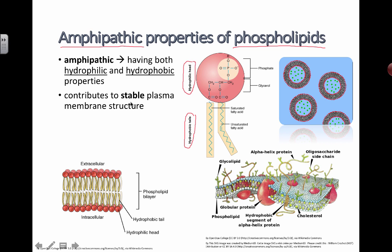This helps to contribute to the stable plasma membrane structure. This would be a perfect question to ask - it could be like a six to eight point question: Explain how the amphipathic properties of phospholipids help to contribute to the stability of the plasma membrane.